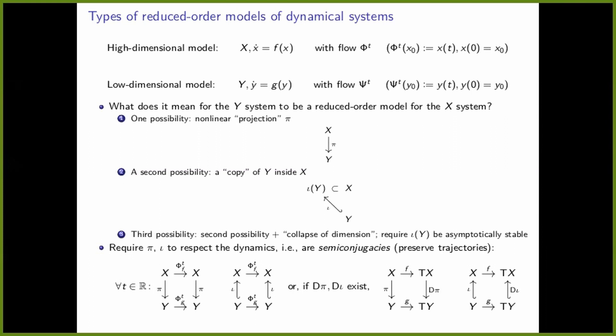Nothing I've said so far has anything to do with dynamics. The strongest thing you would want is for these maps to respect the dynamics — that they are semi-conjugacies, meaning they send trajectories to trajectories while preserving time. This is encoded by imposing that the commutative diagrams at the bottom hold: the flows commute with the maps.